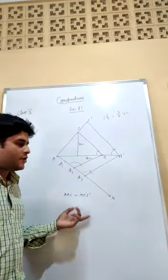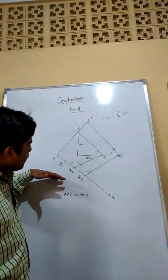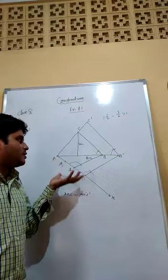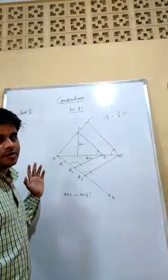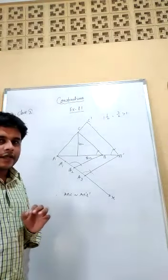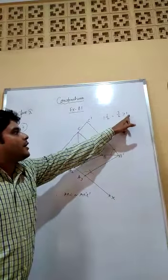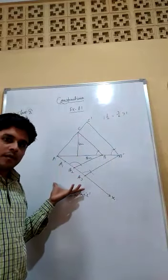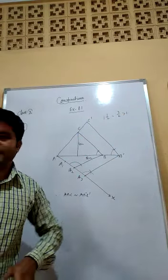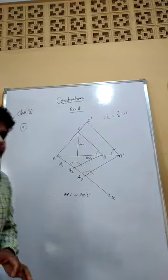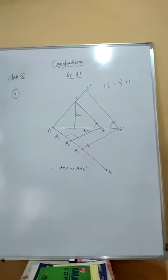Again, remember the steps of construction. Basically, to draw a similar triangle there are two types of problems: either the scale factor is greater than 1 or less than 1. I have done both types of problems; the others you can solve on your own. I am leaving exercise 11.1 here. Thanks for watching.